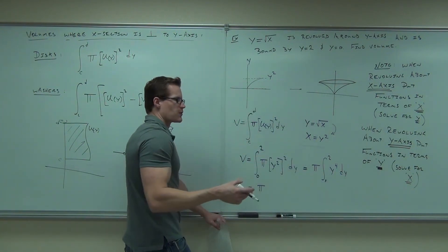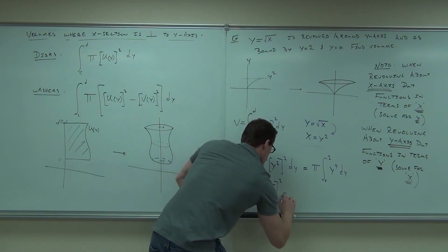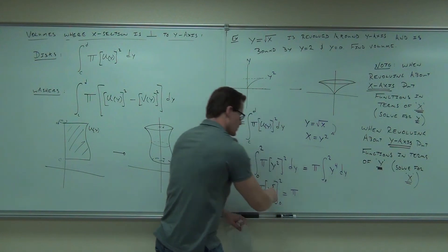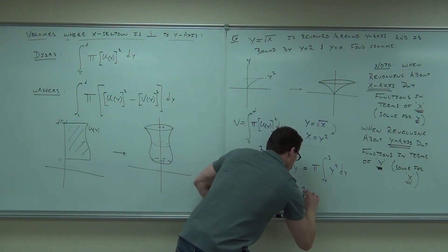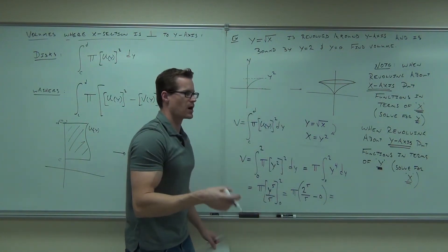We'll get pi from 0 to 2, y to the 4th dy. That's pi. Y to the 5th over 5, because you know how to do integrals real well. From 0 to 2, pi will do 2 to the 5th over 5, minus 0. What we're going to end up getting is 32 pi over 5.